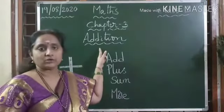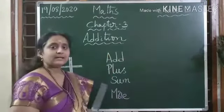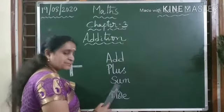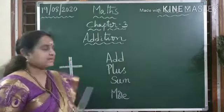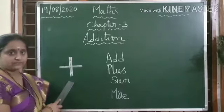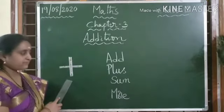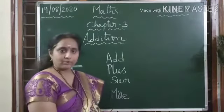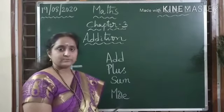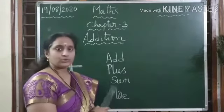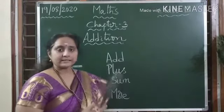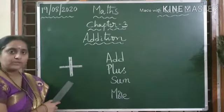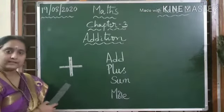Today we are going to learn the topic of addition. The other words for addition are: add, plus, sum, more, etc. This is the symbol for addition — it can be read as plus. Whenever we see these words in any problem or in our textbook, we need to do addition there. Whenever you see this symbol in between two numbers, we need to add the numbers.